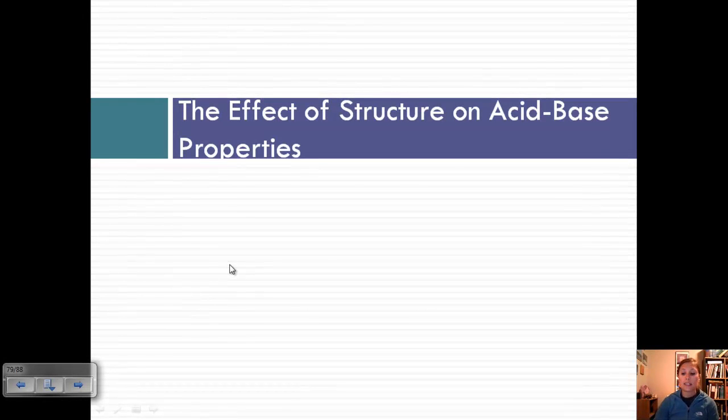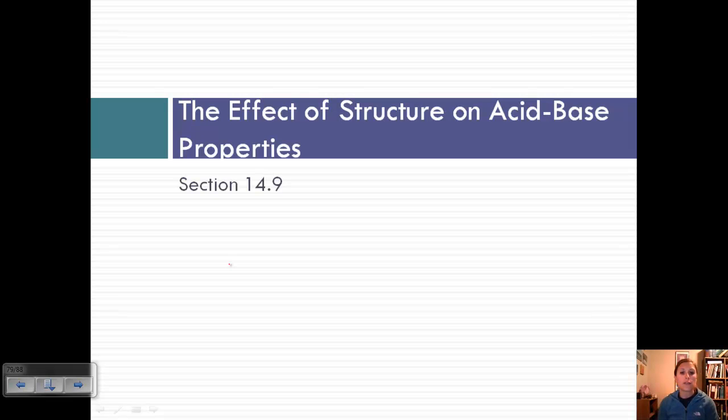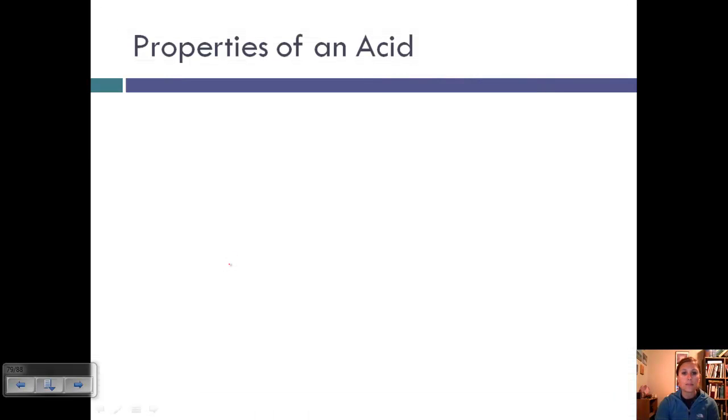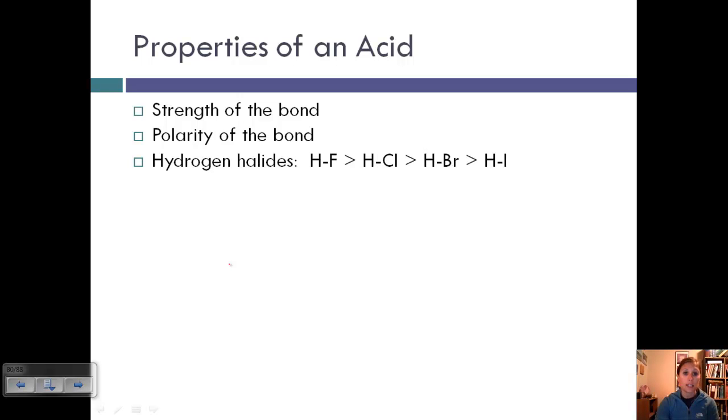Today we're going to discuss the last sections of chapter 14, which involves sections 14.9 through 14.12. First, let's talk about the effect of structure on acid-base properties. If we look at properties of an acid, two things that determine them are the strength of the bond and the polarity of the bond.